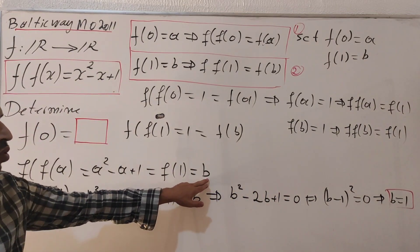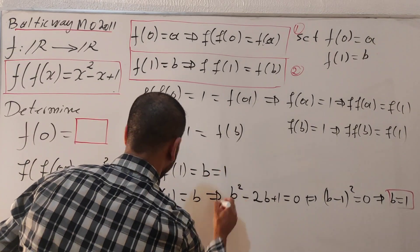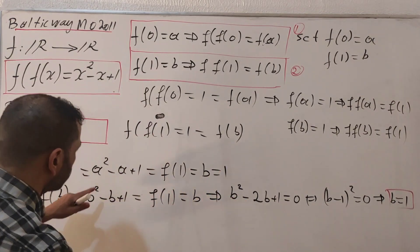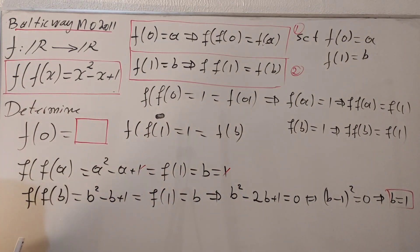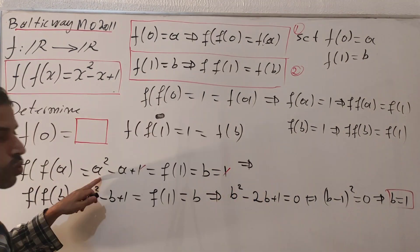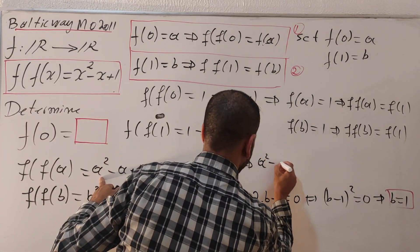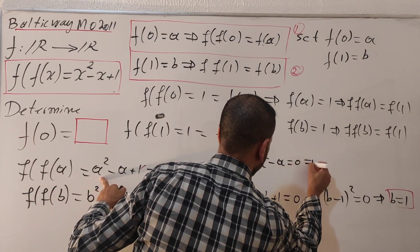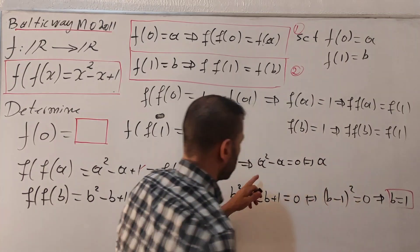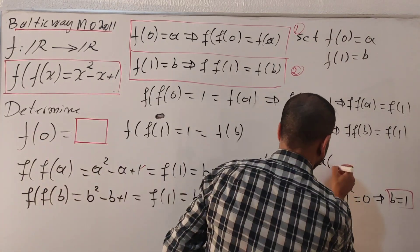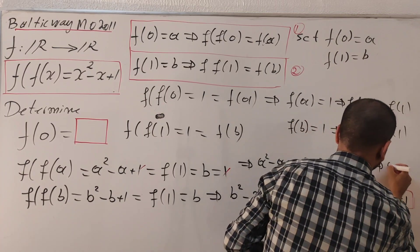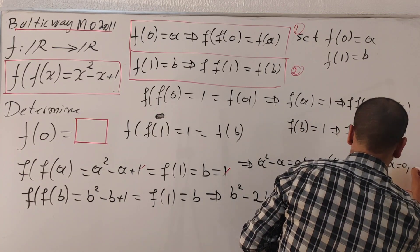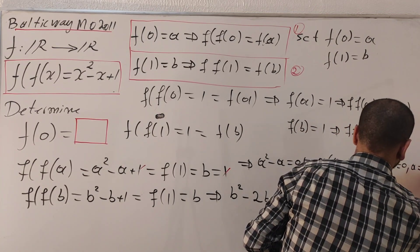Taking this value of b equals one and inserting it back, a squared minus a plus one equals one. Canceling one from both sides gives a squared minus a equals zero, which factors as a times a minus one equals zero. This gives us two solutions: a equals zero or a equals one.